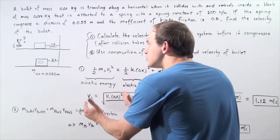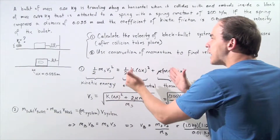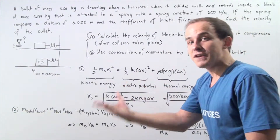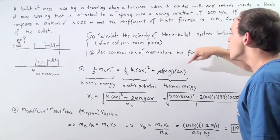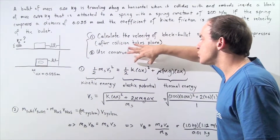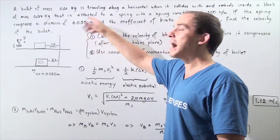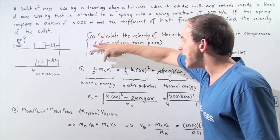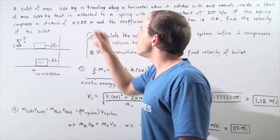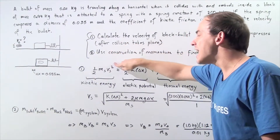In step one, the kinetic energy gained by the block and bullet is completely transformed and equals the elastic potential energy of the spring plus the thermal energy due to friction. The thermal energy term is mu, the coefficient of kinetic friction, multiplied by the normal force multiplied by displacement, 0.055 meters. The elastic potential energy is one-half k times delta-x squared, where k is the spring constant and delta-x is 0.055 meters. The system mass ms is the block plus bullet: 0.01 plus 0.99, giving us 1 kilogram.